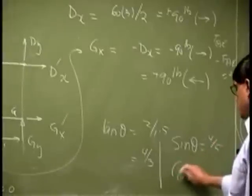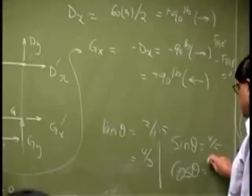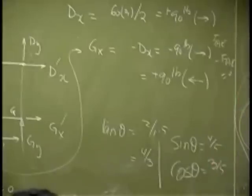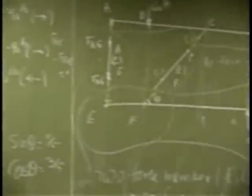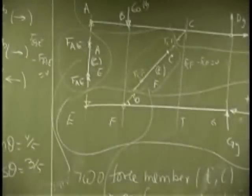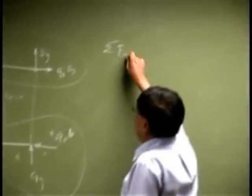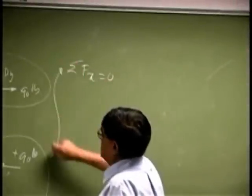4 fifth cosine theta is 3 fifth and that also happens to be this angle. So what we are going to do is we are going to sum the force in x direction for the bottom one.